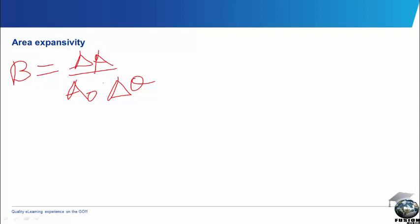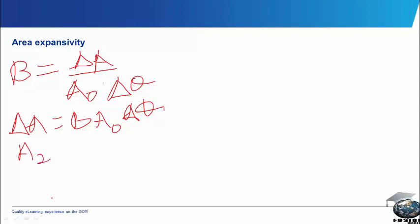Bringing these thoughts, we said beta is equal to change in area divided by original area and change in temperature. Similarly, we can obtain delta area as beta A0 delta theta. Expanding further, we have A2 equal to beta A0 delta theta, then the A that will be crossing over from here will have plus A0.